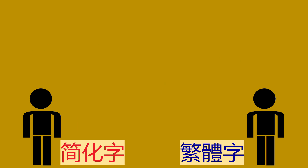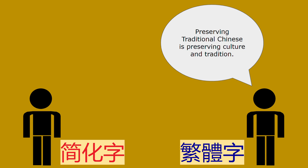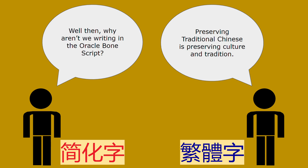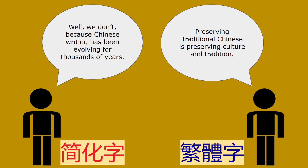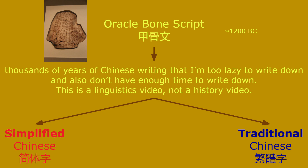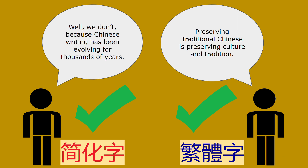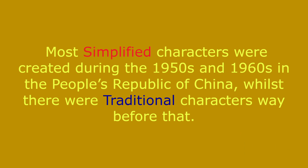There are many other arguments surrounding character shape and form, but let's move on to culture. People who defend traditional Chinese claim that preserving traditional forms is preserving culture and tradition. Supporters of simplified Chinese counter by asking why we aren't still writing in Oracle Bones script — pointing out that Chinese writing has been evolving for thousands of years. That said, traditional characters do hold more cultural and traditional relevance since most have been around far longer than simplified characters.